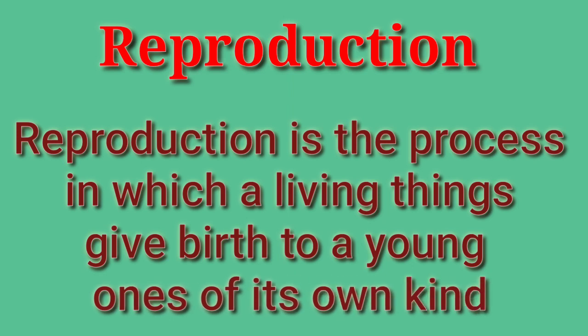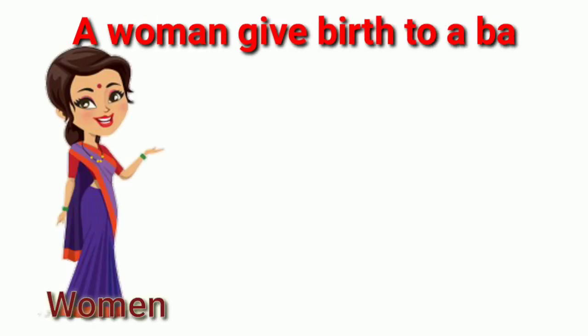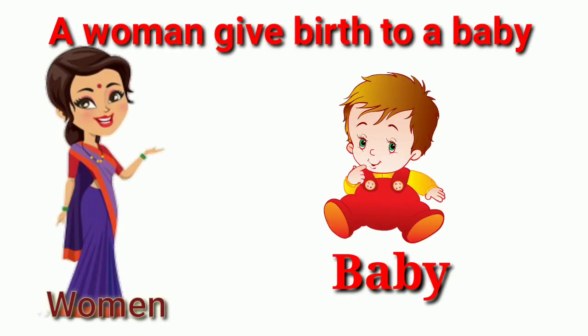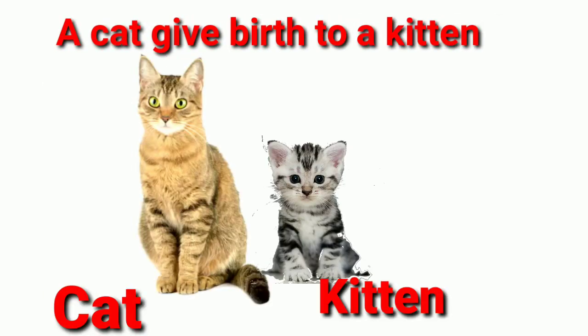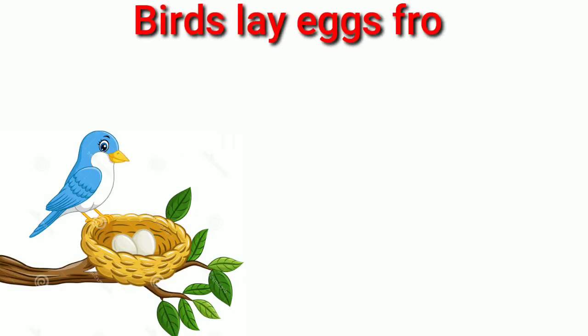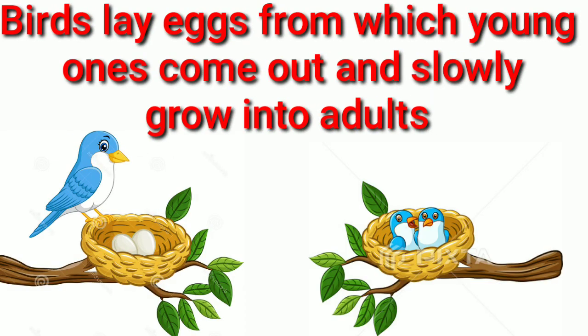Living things can reproduce. Reproduction is the process in which a living thing gives birth to a young one of its own kind. A woman gives birth to a baby. A cat gives birth to a kitten. Birds lay eggs from which young ones come out and slowly grow into adults.